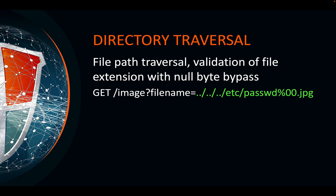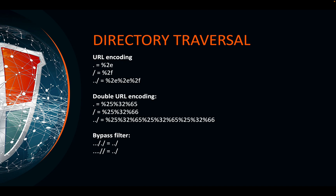Another thing is when the application checks that the file extension must match — for example, the /etc/passwd file has no extension, so putting passwd.jpeg would fail. You can use a null byte: it serves two purposes. The filter looks for .jpeg and that criteria is satisfied because the string ends in .jpeg, but the null byte confuses the application into only reading up to the null byte, so it successfully reads /etc/passwd while the filter still sees the jpeg extension and allows the request through.